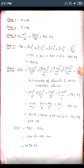Step 4: The Total Sum of Squares (TSS) is calculated as the summation of x₁² + x₂² + x₃² + x₄² minus the correction factor CF from Step 3. Substituting the values gives us TSS.